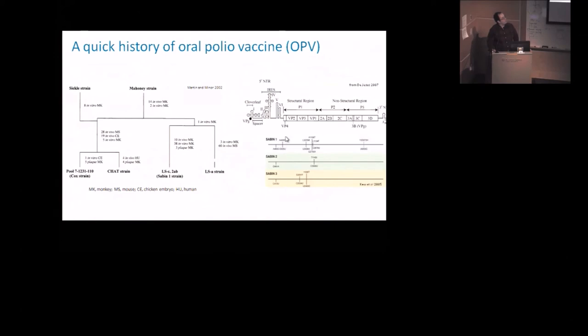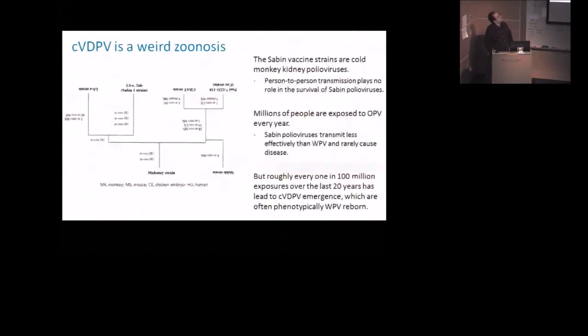And one of the things that was really interesting is the Sabin strains, all three of them had an important change in this ribosome binding area. And that seems to be a key determinant of replicative fitness. And so even in vitro replicative fitness is definitely something to do with the human phenotype. And so that's an interesting thing. So the catch is, as we talked about with the CVDPV thing, I think this is a really weird zoonosis.